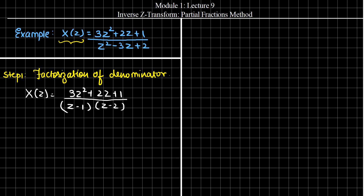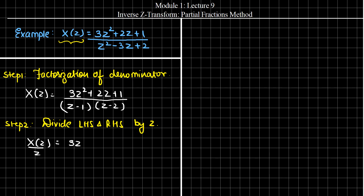Moving on to the second step, we need to divide both sides by Z. Therefore, what we get is X(Z)/Z equal to 3Z-squared plus 2Z plus 1, all divided by Z into (Z-1) into (Z-2).